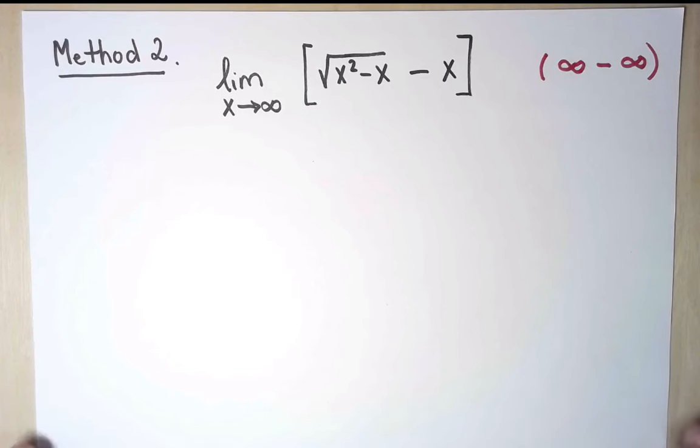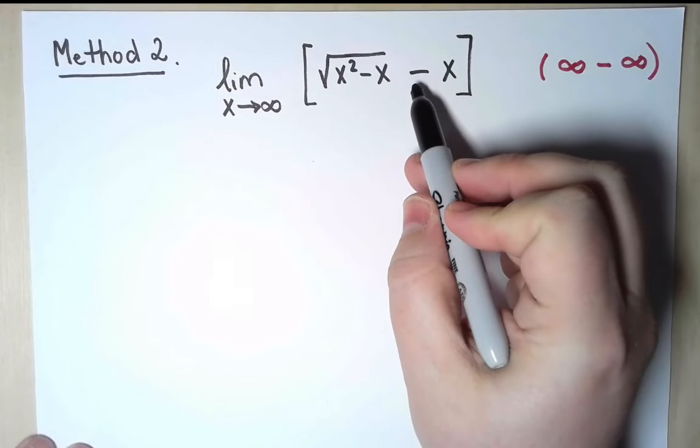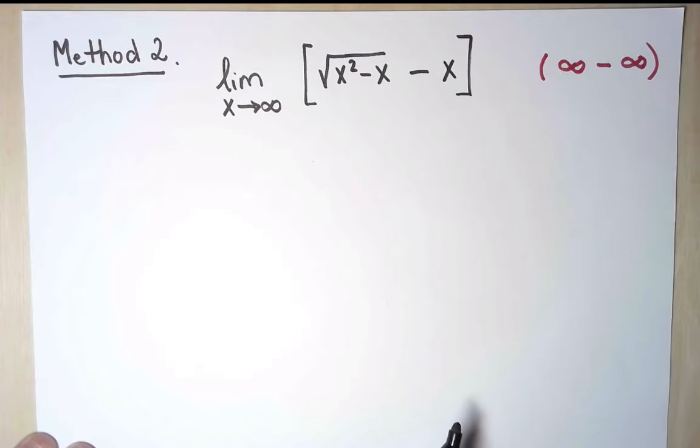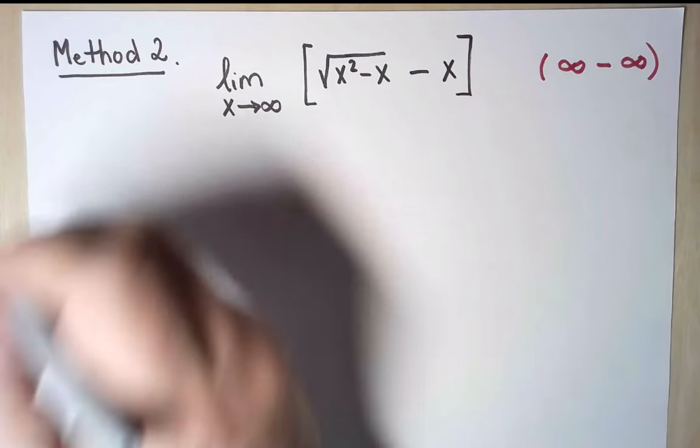For my second method, I'm going to try to solve this limit without using L'Hôpital's Rule at all. The reason this limit is complicated is because of this minus sign. And one way to change the signs with expressions that involve roots is to multiply and divide by the conjugate. So let's try that.